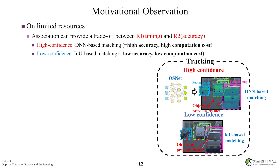For the association part, we also adjust the load. For high confidence association, we apply DNN-based matching, which associates objects using feature maps. It takes longer but yields higher accuracy and higher computation cost. On the other hand, low confidence association uses IOU-based matching, which takes shorter time than high confidence association but yields lower accuracy.